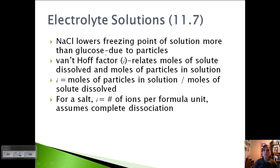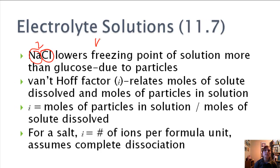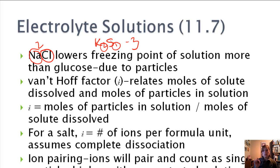For salt, not just table salt, but a lot of ionic compounds, i is equal to the number of ions per formula unit. We're assuming complete dissociation here. So for NaCl, it's breaking up into Na and Cl, so it would be two. What if we had like K2S? Then it would be three because we've got two potassiums and one salt.